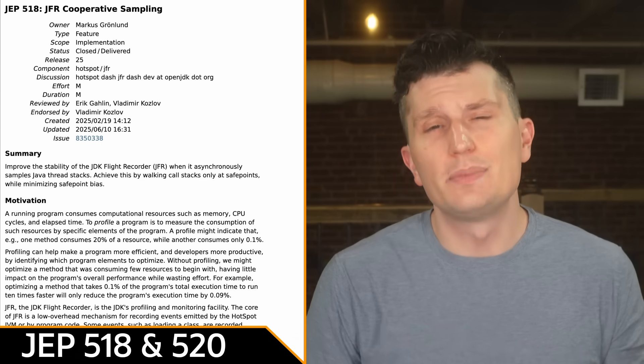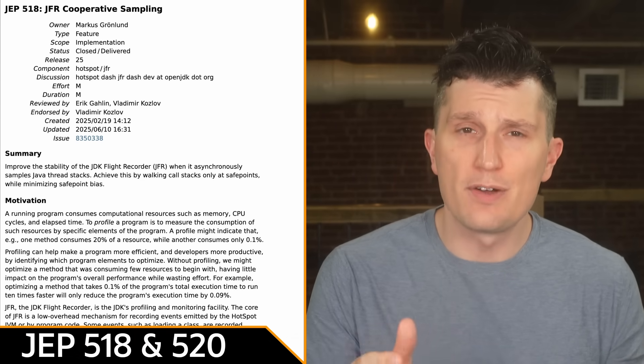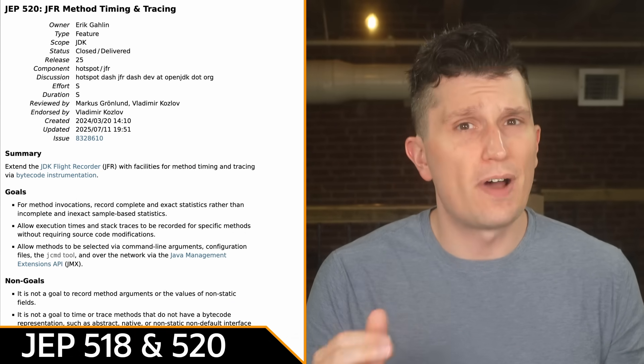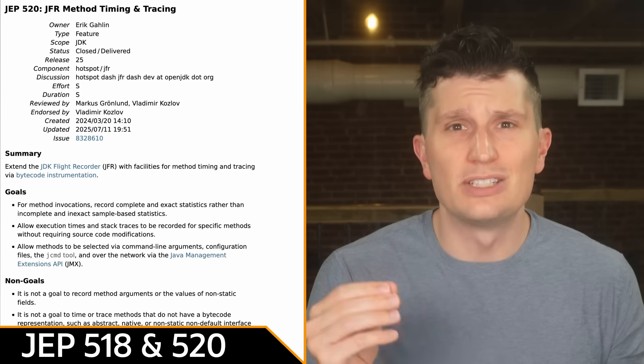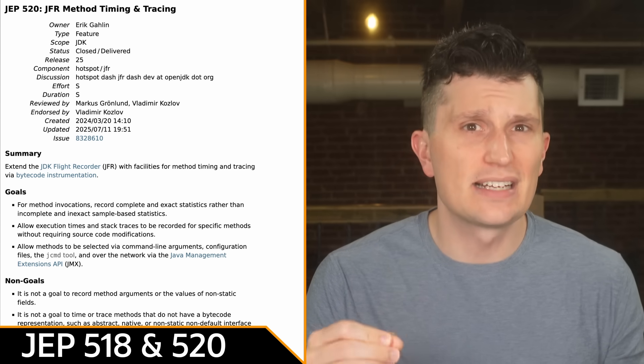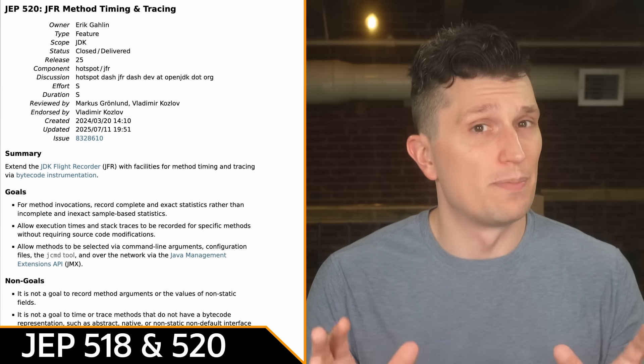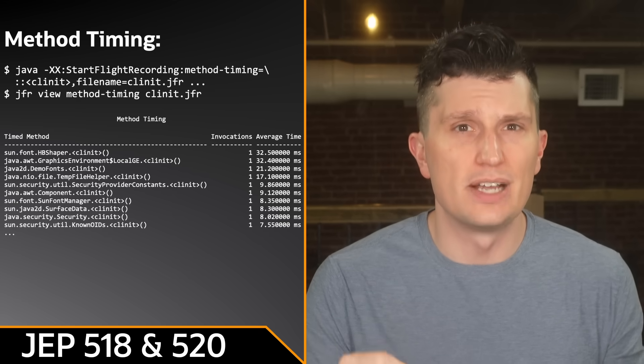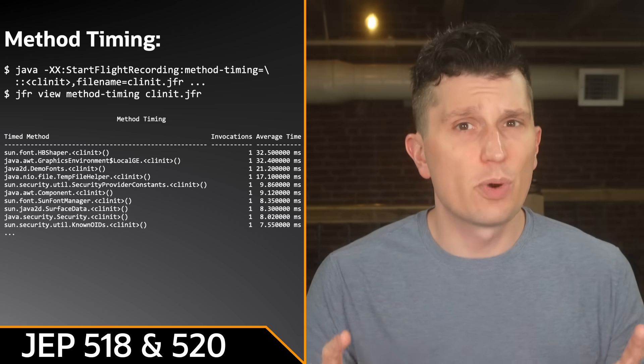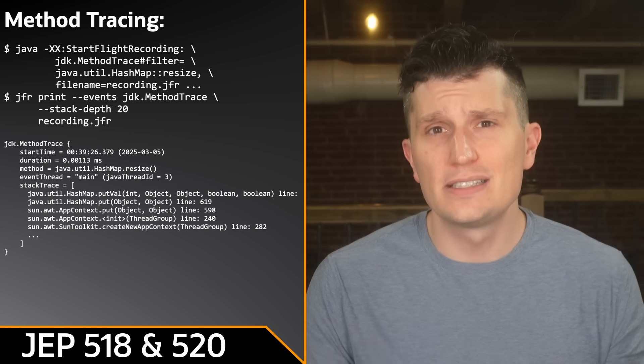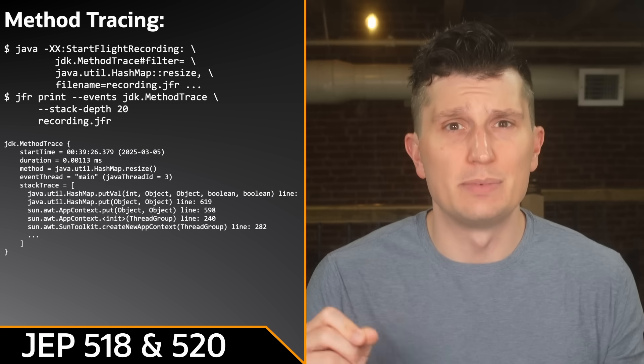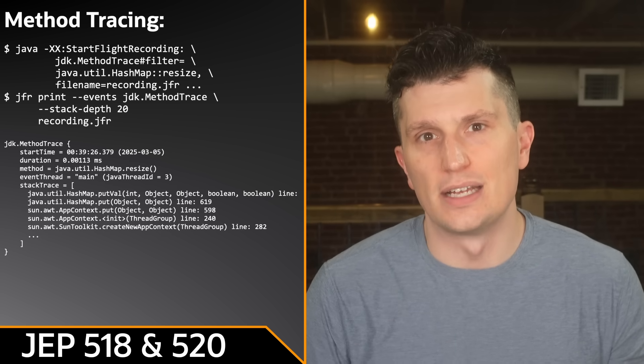JFR got two major updates in JDK 25 with JEPs 518 and 520. JEP 518 improves JFR's ability by redesigning its thread stack sampling mechanism. JEP 520 improves JFR's ability to time and trace method execution. This works via JFR's events and configuring the methods to be timed and traced, like in this example.